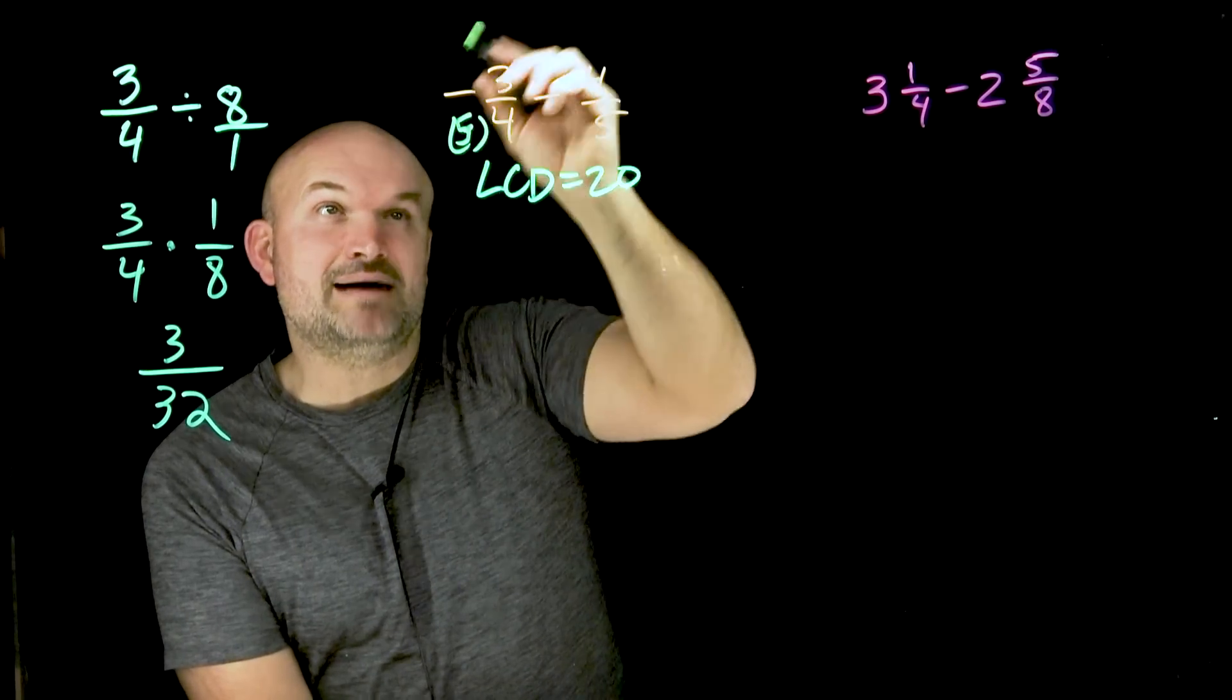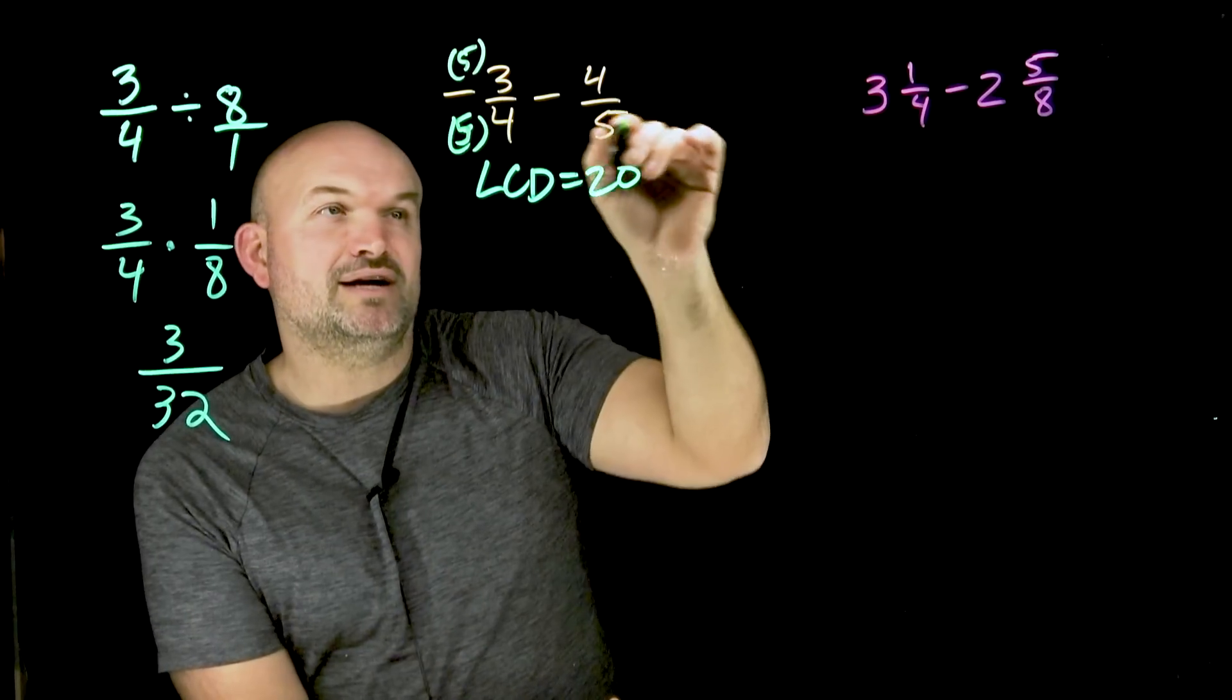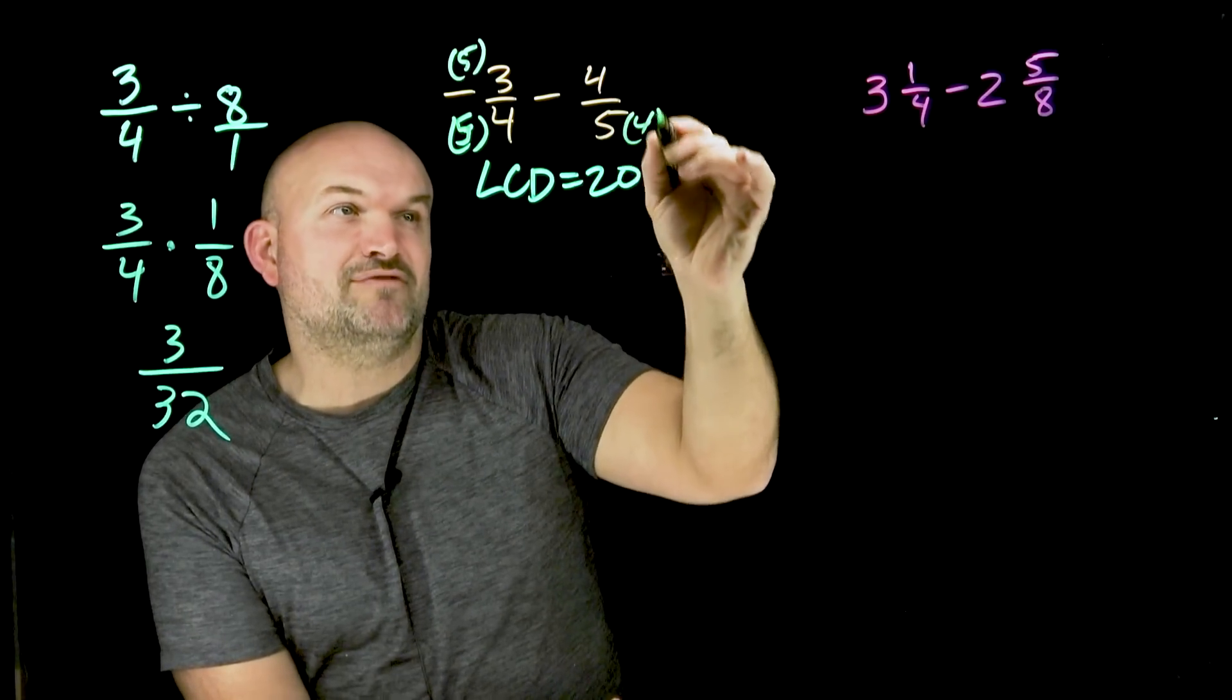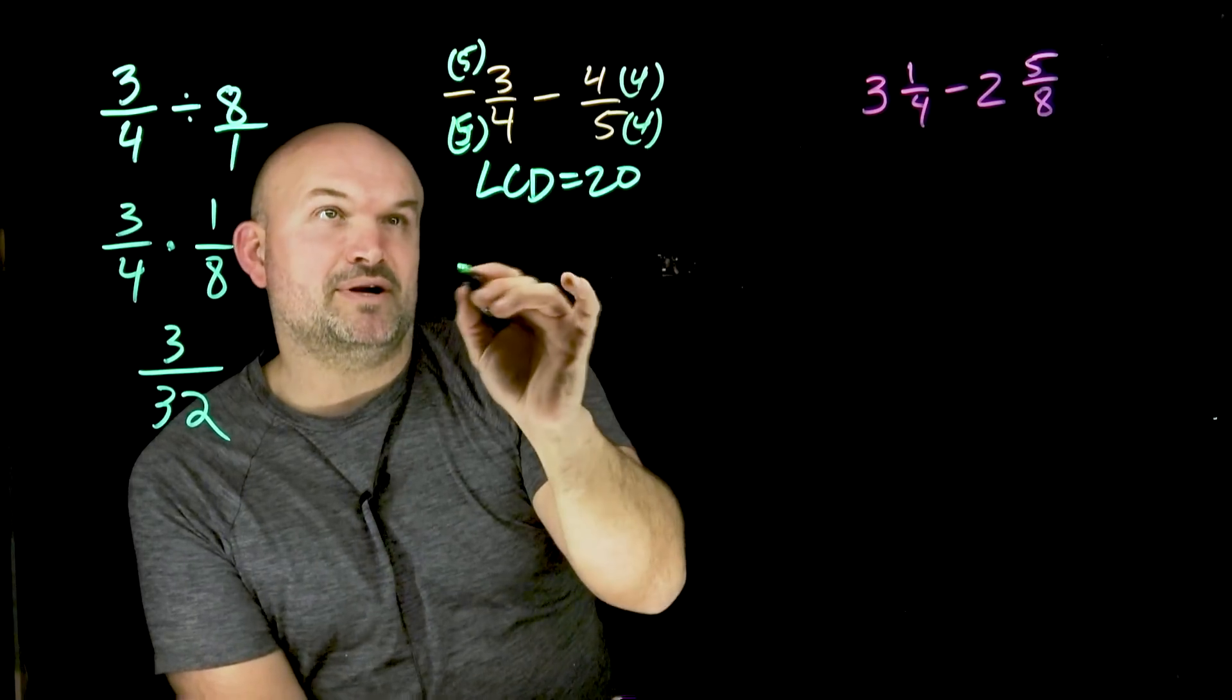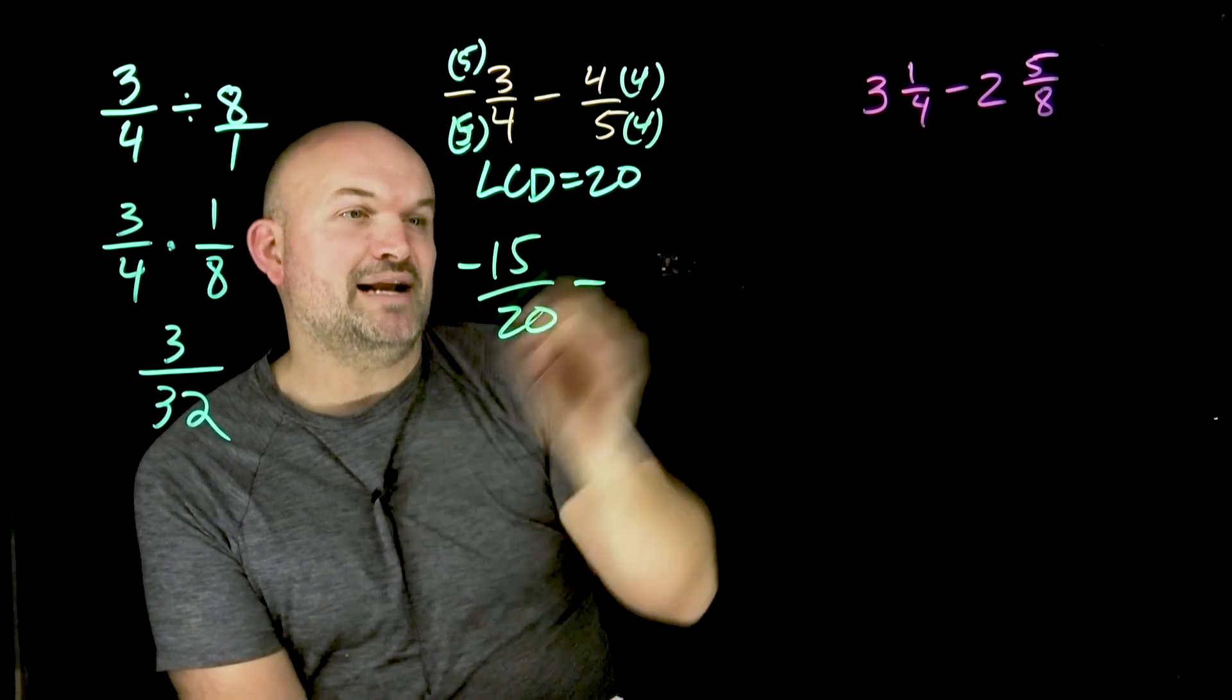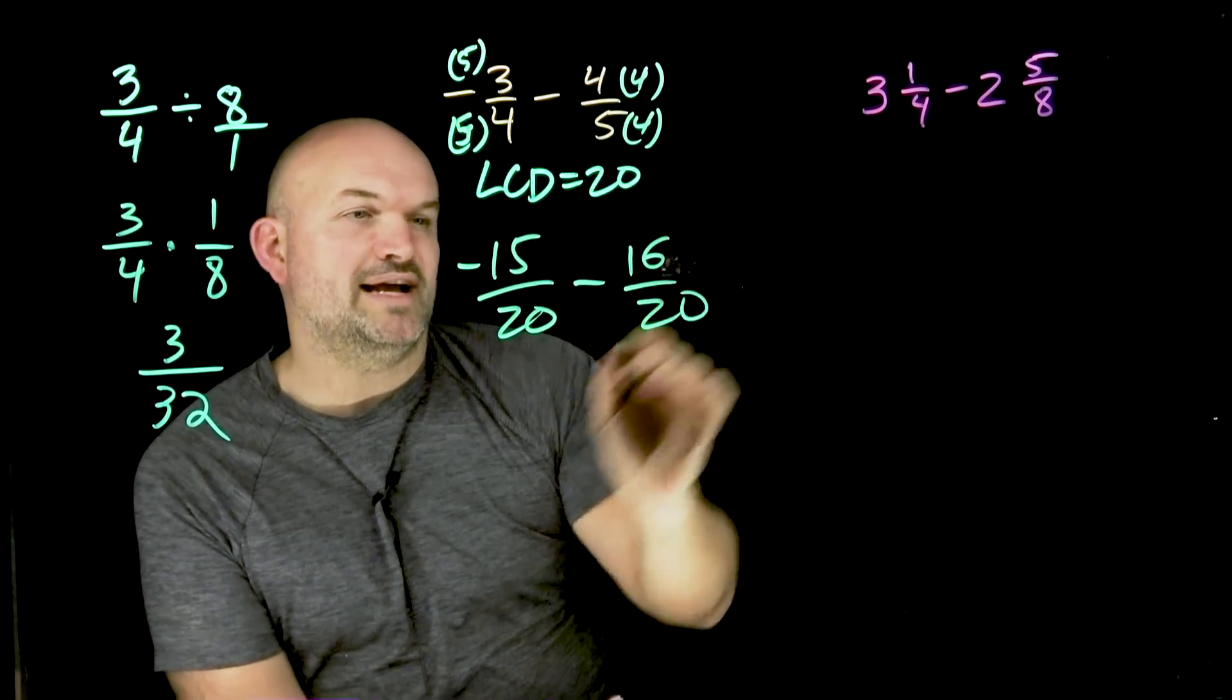So therefore, since I'm multiplying a five in the denominator, I need to multiply by a five in the numerator. Over here, to get a 20, I need to multiply by a four. So I'll multiply four on the top and the bottom. So up top here, I'll have a negative 15 over a 20 minus a 16 over a 20.